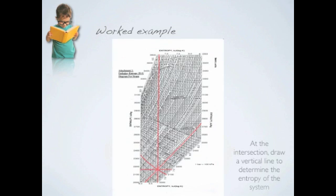Referring back to the Mollier diagram, since the system is isentropic, we would need to draw a vertical line at the intersection to determine the entropy of the system. In this case, the entropy is 6.7 kilojoules per kg kelvin.